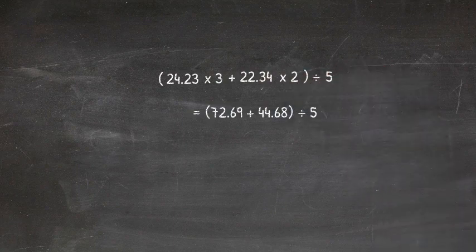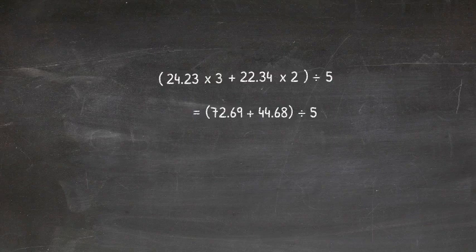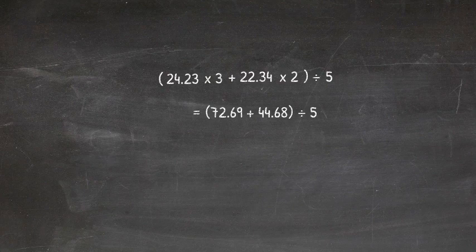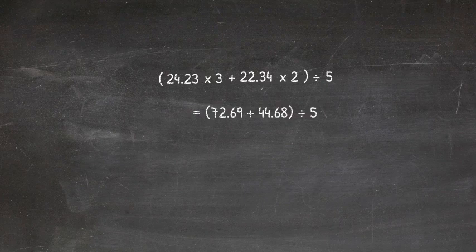So three months, he bought 24.23 shares, which gives us 72.69 shares in those three months. Plus two months where he bought 22.34 shares, which gives us 44.68 shares in the later months. All of this will be divided by five.